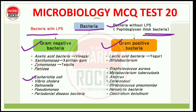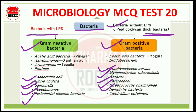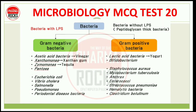Gram-negative के examples याद रखना है: E. coli, Vibrio cholerae, Salmonella species, Pseudomonas, and periodontal disease bacteria. Gram-positive में: Staphylococcus, Mycobacterium, anthrax, Enterococci, Streptococcus, hemolytic bacteria, and Clostridium botulinum. Gram-negative के characteristics में: acetic acid bacteria (vinegar), Xanthomonas, xanthan gum, Zymomonas (tequila), and Pentoya.